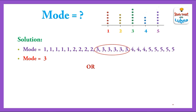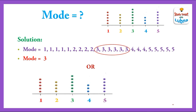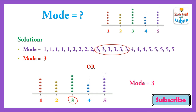There is one more way to find the mode using the Dot Plot. You can see that 3 is the number having the most dots, so 3 is the mode. Both methods are correct and you can use either to find the mode using a Dot Plot.